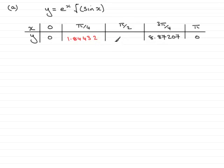For pi upon 2, you should find that you get 4.81047 when rounded to five decimal places.